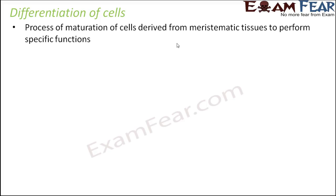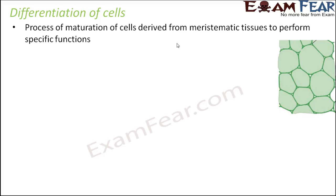So differentiation always follows cell division. Only after the cells have been formed, only after the daughter cells have been formed, they will undergo differentiation. Let us take an example — the parenchyma cells. These are the cells which are formed as a result of cell division. Now these parenchyma cells differentiate. When cell division happens, whatever cells are formed, they are all similar. It is not like this is a parenchyma cell which is formed or this is a sclerenchyma cell which is formed. So all cells are formed, and then some of them differentiate and mature in a specific way.